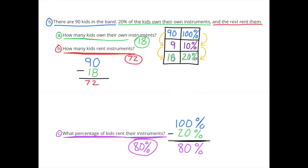B, how many kids rent instruments? 90 minus 18 equals 72. 72 kids rent their instruments. C, what percentage of kids rent their instruments? Well, if 20% own their own instruments and the rest of them rent, then 100% of the kids minus the 20% who own equals 80%. So 80% of the kids rent their instruments.